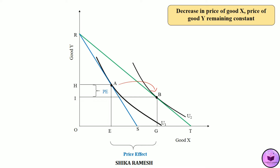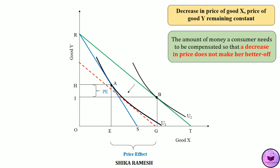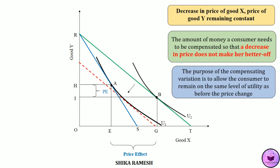Here the consumer is in a better off situation — when the price of good X has decreased, the real income or the purchasing power of the consumer increases and the consumer has reached a higher utility level. So using compensating variation in income, this increased real income is adjusted so that the consumer remains at the same level of utility as before the price change. In other words, the increased real income is adjusted so that the consumer maintains the initial utility level U1.